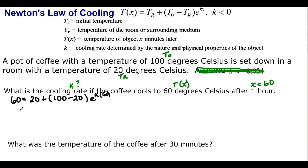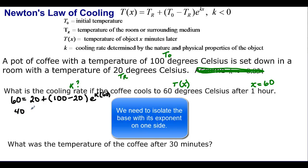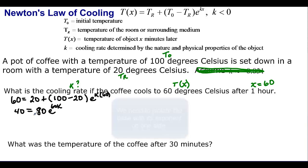So if I bring the 20 over here, I'm going to have 40 is equal to 80 times E to the 60K. But I want to get my base and this exponent all by itself. So I need to divide off the 80. So 40 divided by 80 is going to be 1 half is equal to E to the 60K. And now we're ready to really start solving this.